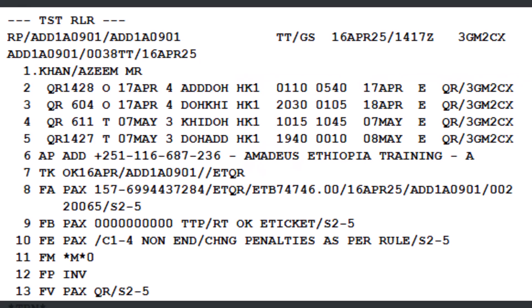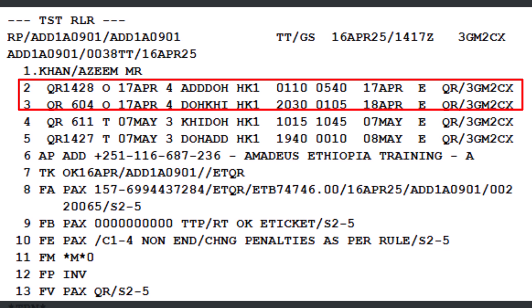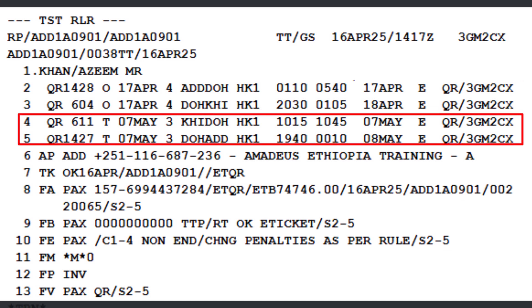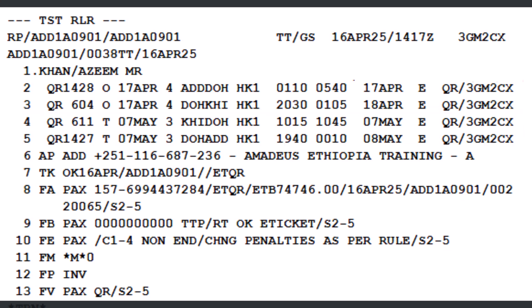In this scenario, the traveler has already completed their outbound journey from Addis Ababa to Karachi on April 17th, and now wishes to modify their return date from Karachi to Addis Ababa. Before proceeding with the date change, it's critical to verify the coupon status of the original e-ticket to confirm which portions remain valid for reissue.